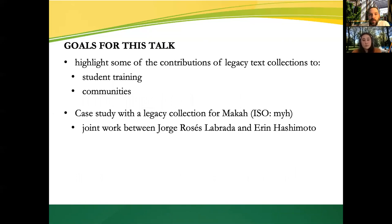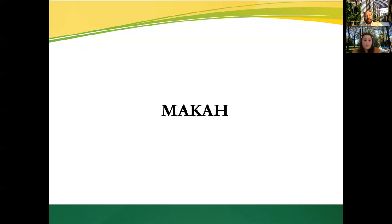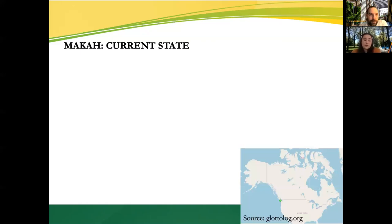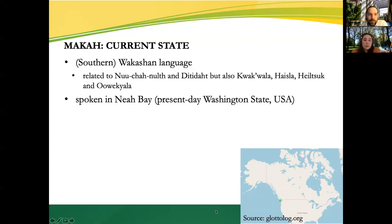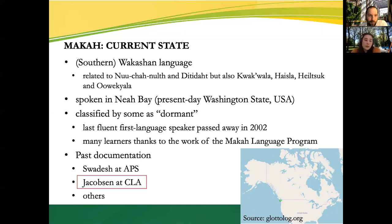This is joint work between myself and Erin. The workflow we're going to walk you through applies to this text collection because it includes audio and reading materials, but it may not apply to all collections and may need to be tweaked. To give a brief background of the Makah language, it's most closely related to Nootka and Ditidaht as southern Wakashan languages, with Makah itself being spoken in Neah Bay in the very northwest of what is currently recognized as Washington State. The language has been classified by some as dormant, with the last fluent first language speaker passing in 2002, but the language has continued to be taught in schools with the support of the Makah language program. There's a fair bit of documentation of Makah, but we'll be focusing on the Jacobson collection at the California Language Archive, which has both audio and written materials publicly available online.